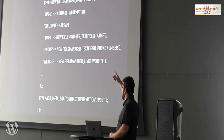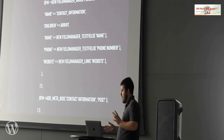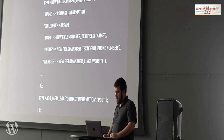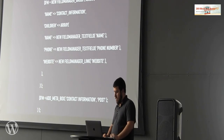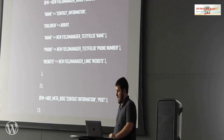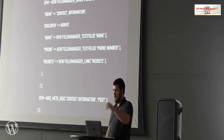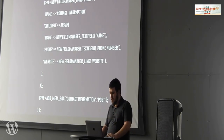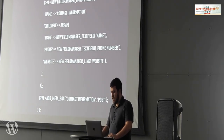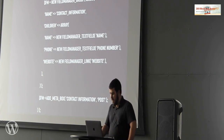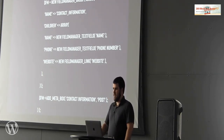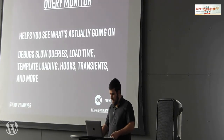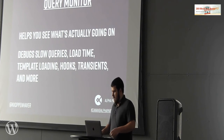Here's how adding a group of fields would look with Field Manager. You specify a group of fields — in this case we'll add contact information to a post. We want a text field for name, a text field for phone number, and a link to the author's website. Then the last line, add_meta_box with 'contact information', and it adds a box below the post with those fields. It handles all the saving and sanitizing of input. More details to come on how this works with Gutenberg, but with the classic editor this is how it sets up meta boxes.